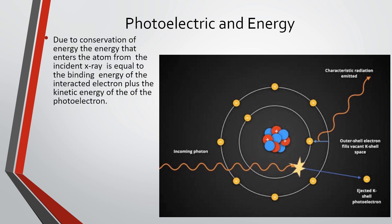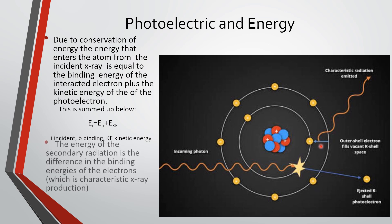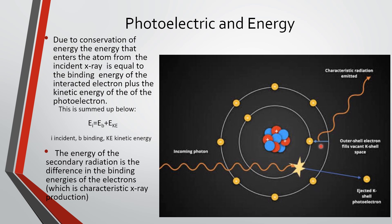Due to conservation of energy, the energy entering the atom from the incident x-ray equals the binding energy of the interacting electron plus the kinetic energy of the photoelectron. The incident x-ray gives up energy to knock out the inner shell electron, and however much more energy it had beyond the binding energy is transmitted into the photoelectron as kinetic energy. The characteristic x-ray emitted has energy equal to the difference in binding energies of the electron shells involved — it has everything to do with the energy of those shells, not the incident photon energy.